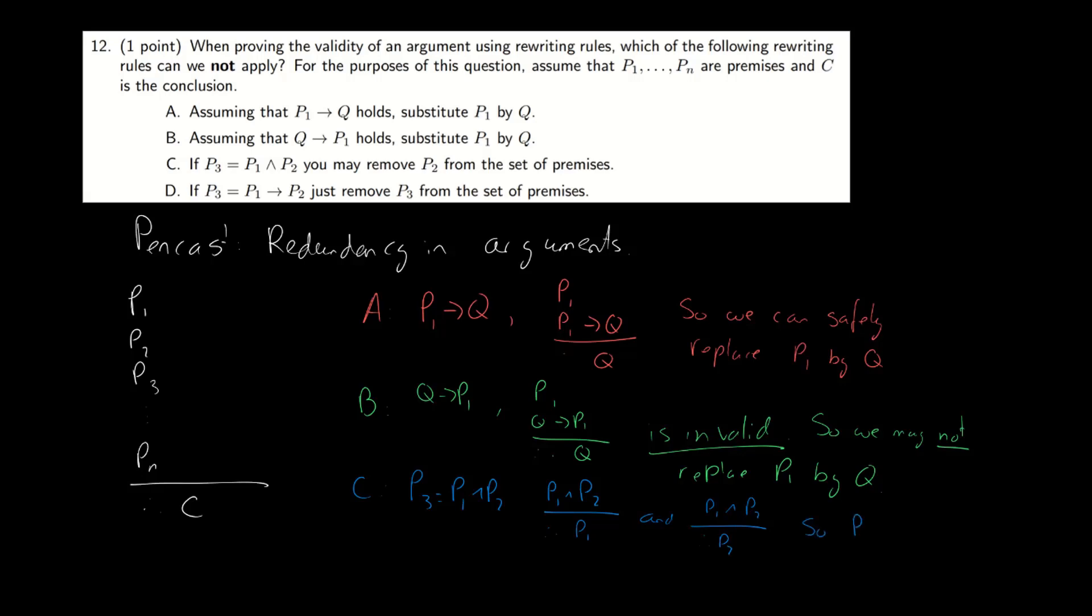So if we have the premise P3, we don't need this premise P1 and P2 explicitly. P3 covers both, so we can remove P2 from the separate premises and lose no information.